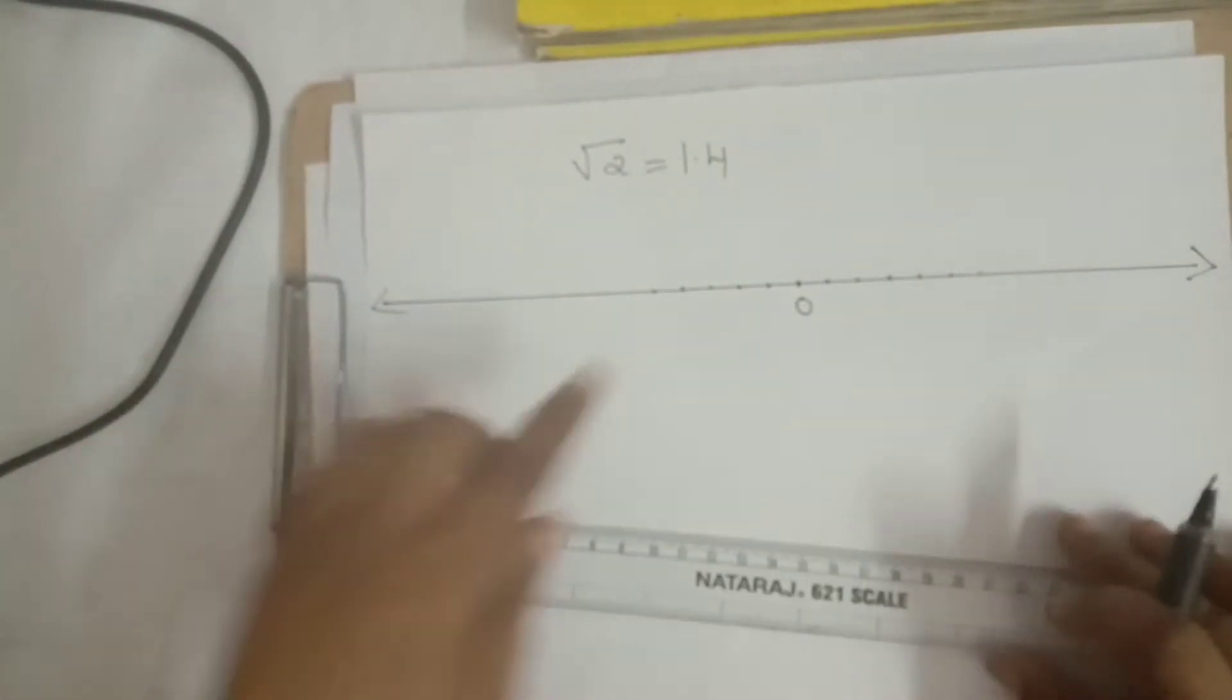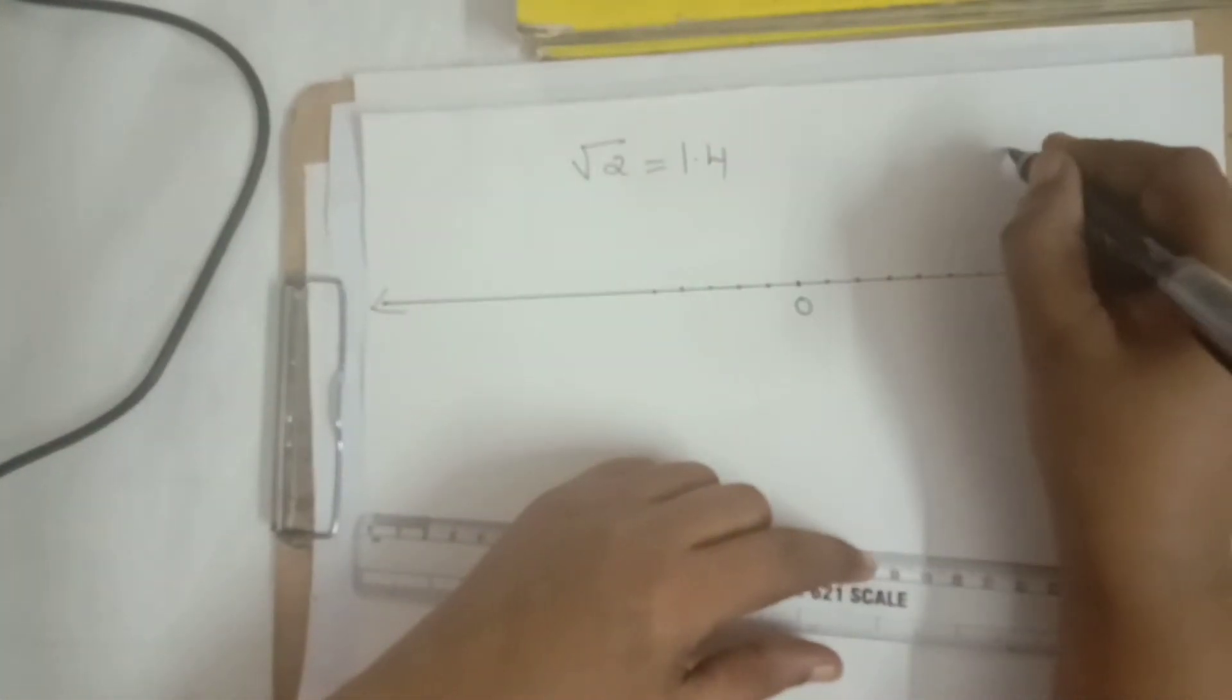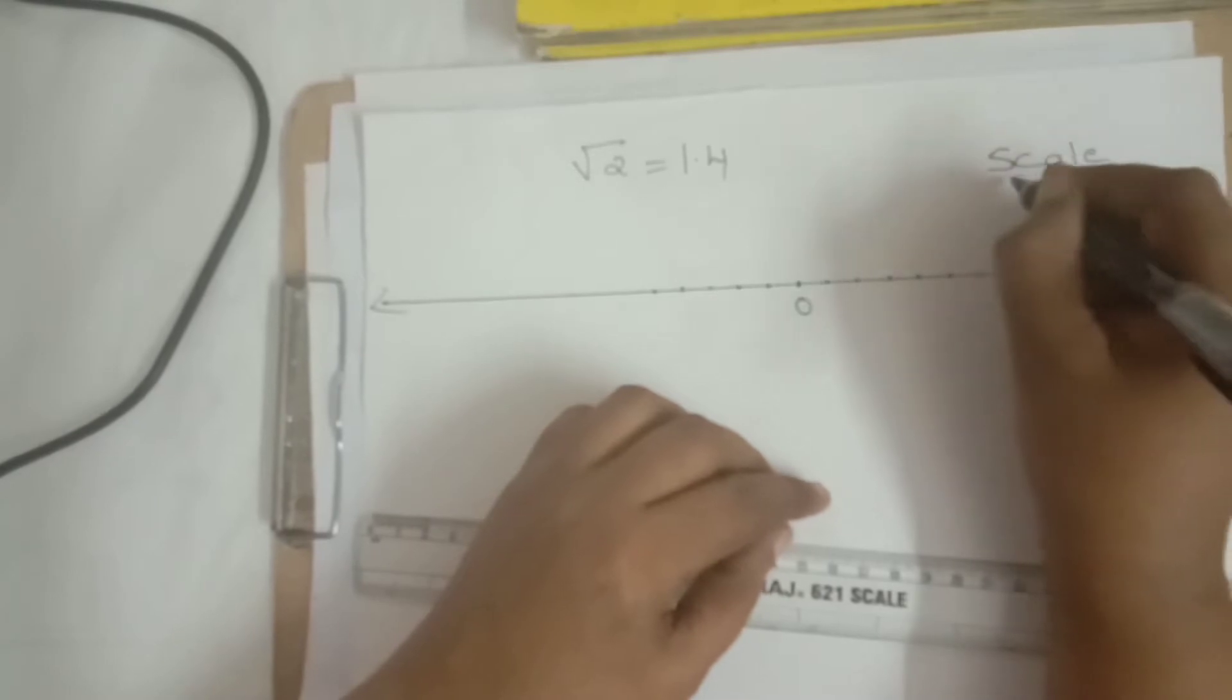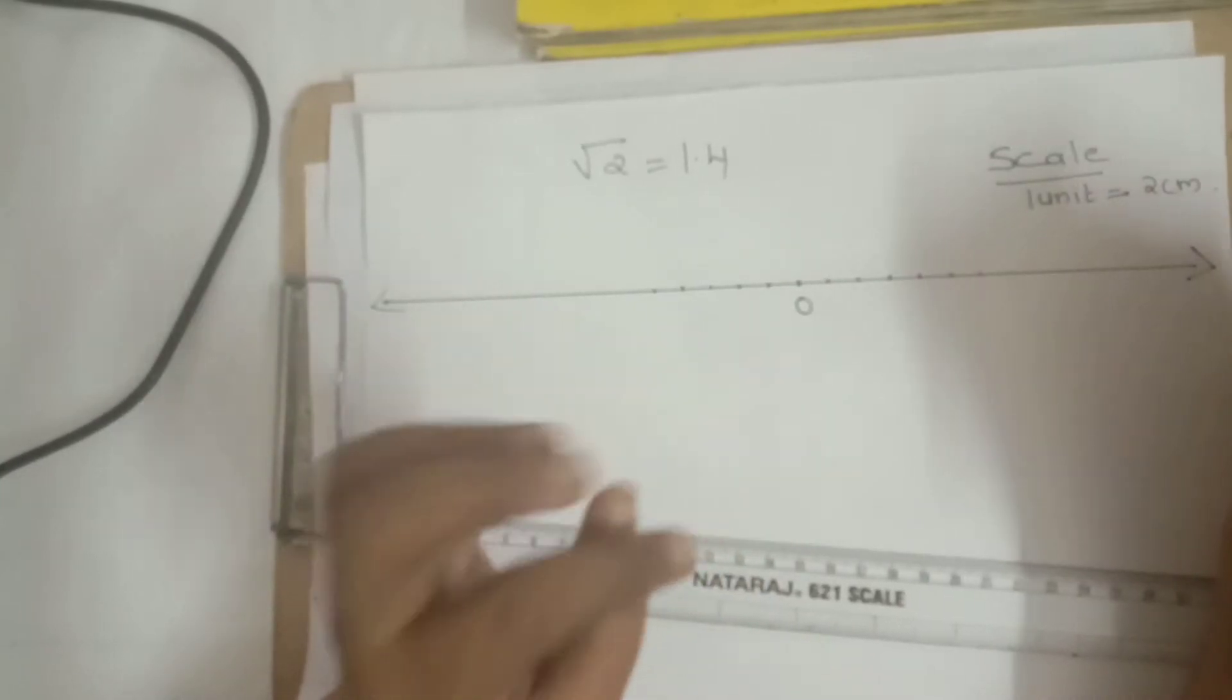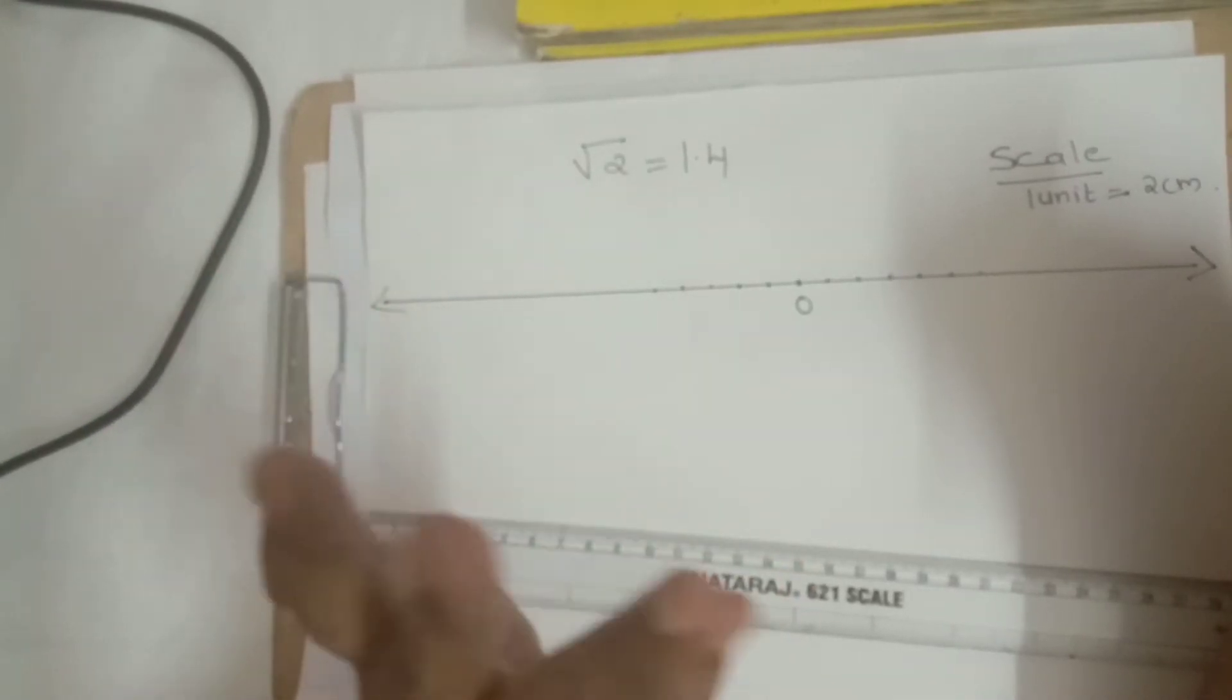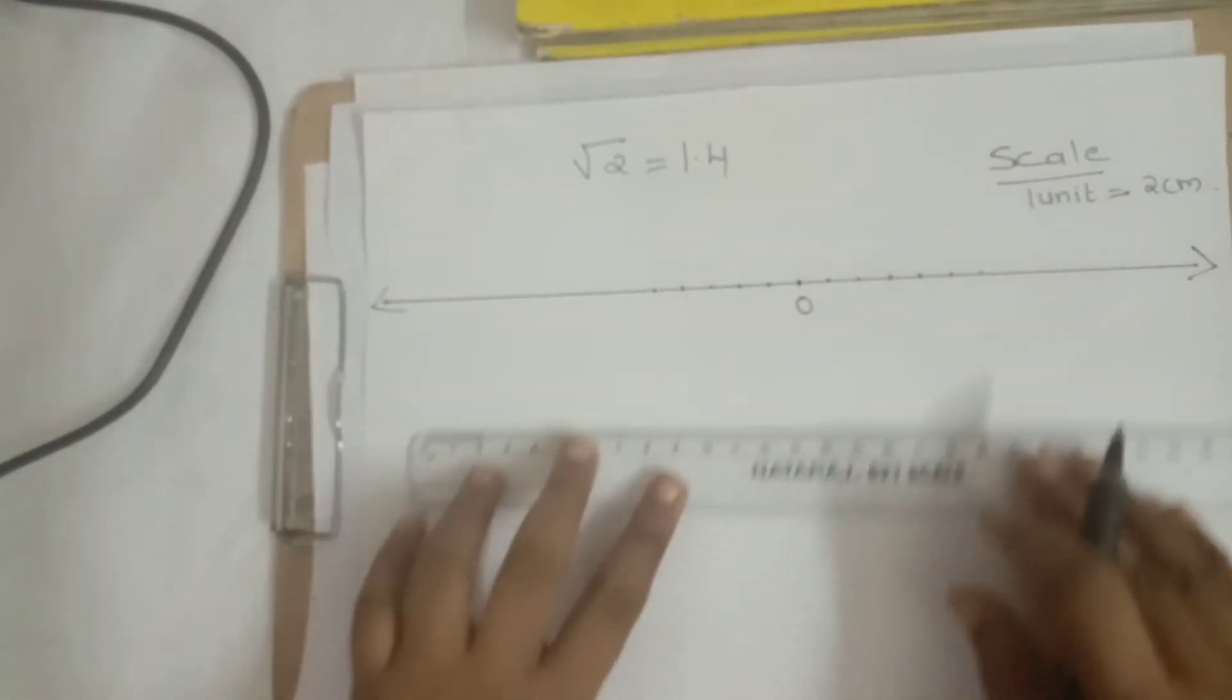For this, since each distance is small, we need a bigger diagram. That's why for the scale reading, consider 1 unit equal to 2 cm. You consider 1 unit as 2 cm so you get a big diagram, otherwise a small diagram will be difficult to see.